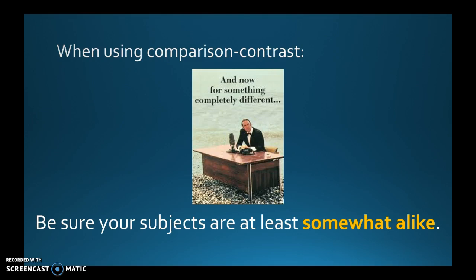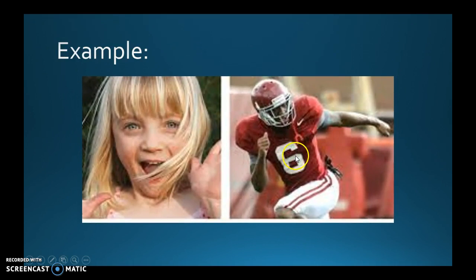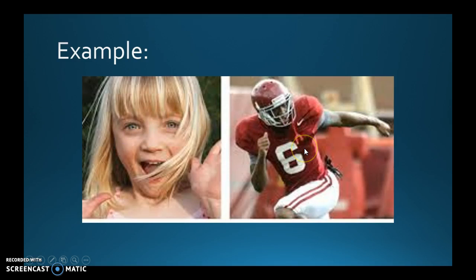When using compare and contrast, you have to make sure the subjects are somewhat alike. If you're going to compare two different things, they need to be somewhat alike. For example, you wouldn't say a college running back is the best because he can run faster than a seven-year-old girl — that's not a fair comparison. You would have to compare him to another college football player. That's why the subjects need to be somewhat the same.